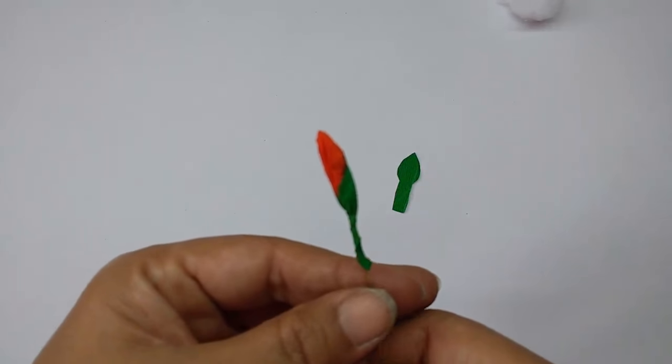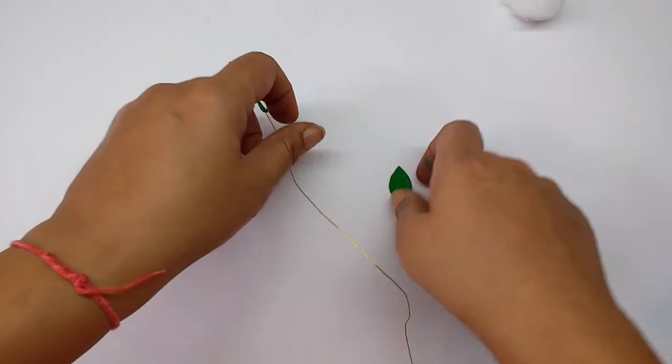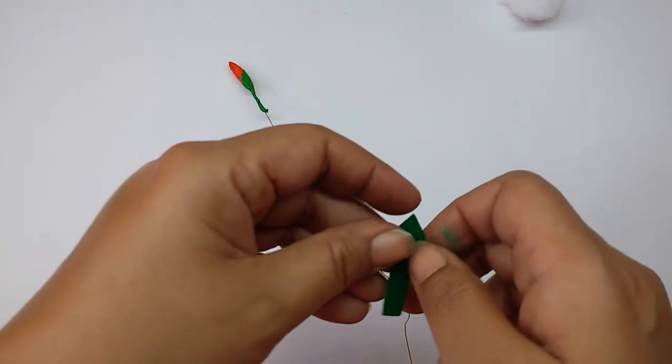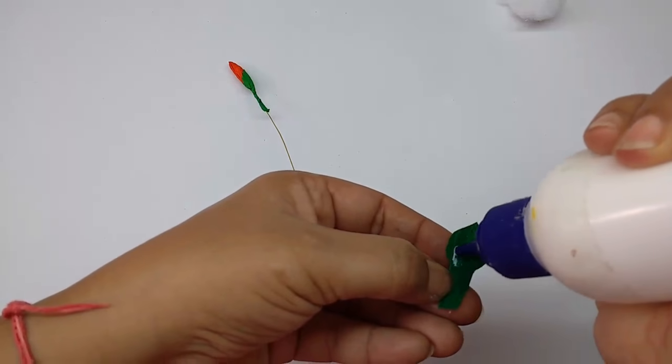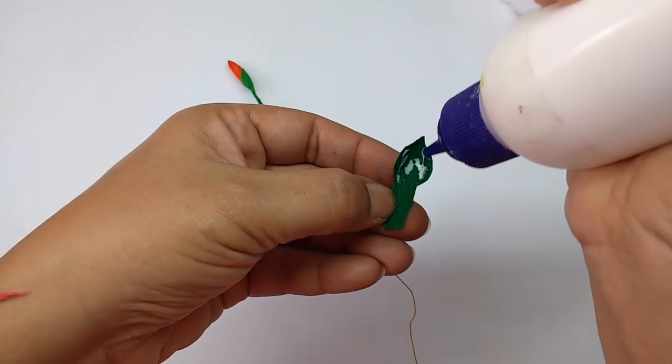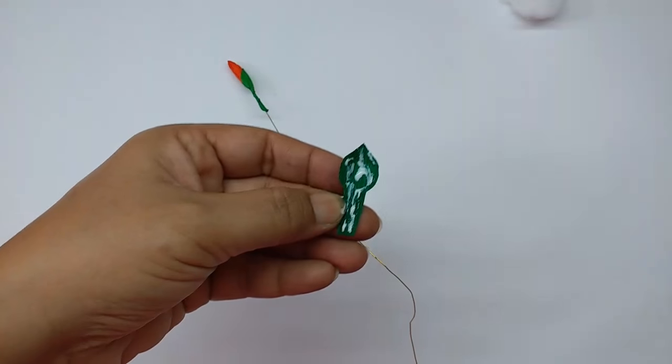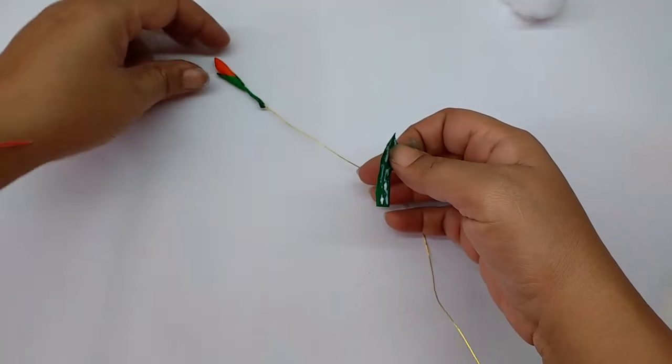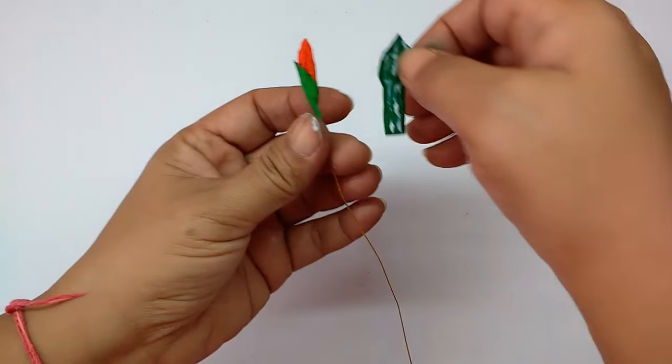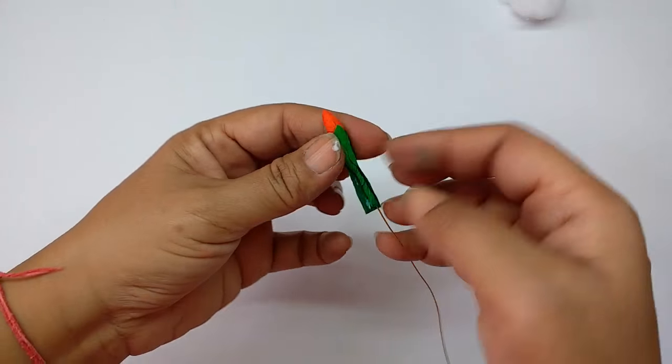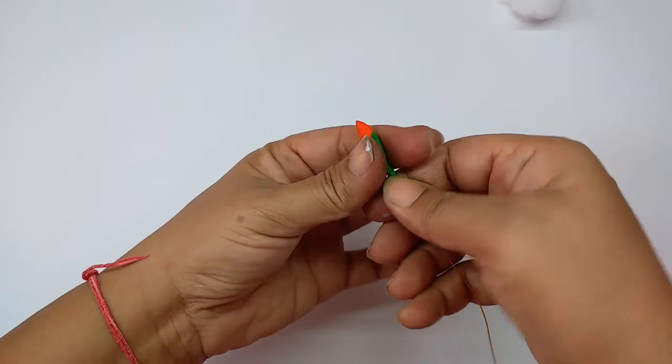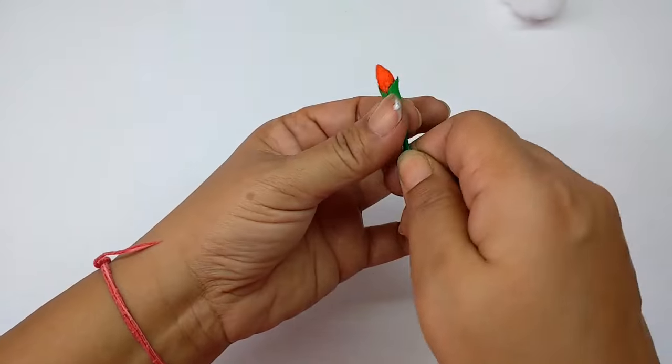Stick the other one right opposite the first one. Stretch it, apply glue, and stick it right opposite the first. Then wind the paper on the wire for the stem.